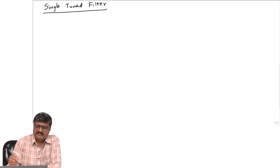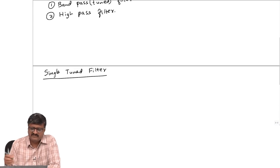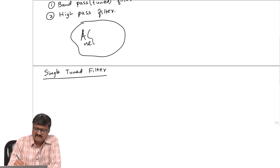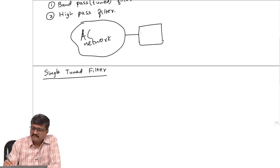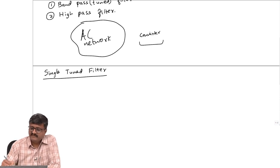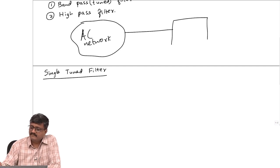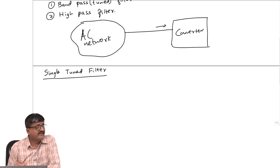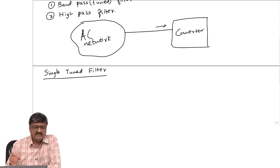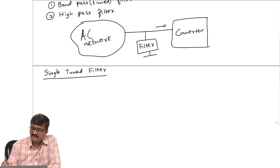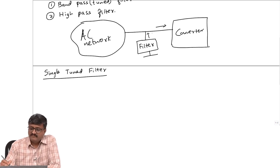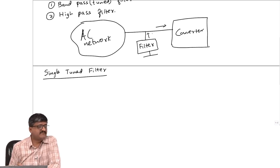So that it does not flow into the AC network. What I am trying to say is: suppose I have an AC network and a converter here. I provide a path — there are harmonics in the currents on the AC side of the converter, and if nothing is done, they will flow in the AC network also. If I provide a path in the form of a filter, the currents will actually flow through the filter and not through the network. That is the idea.